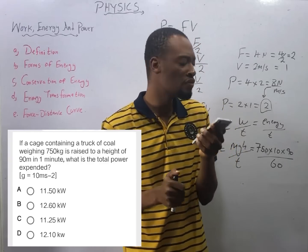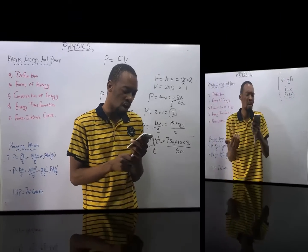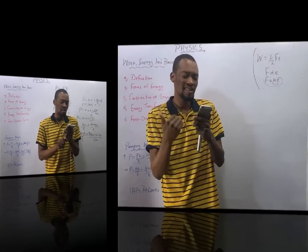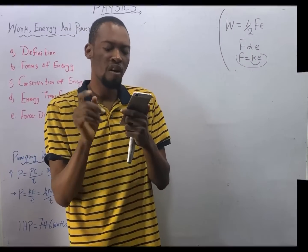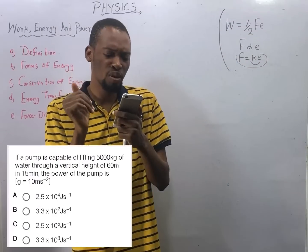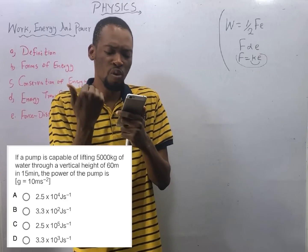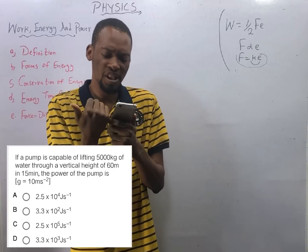Power is 750 × 10 × 90, all over 60. That gives you 11.25 kilowatts.